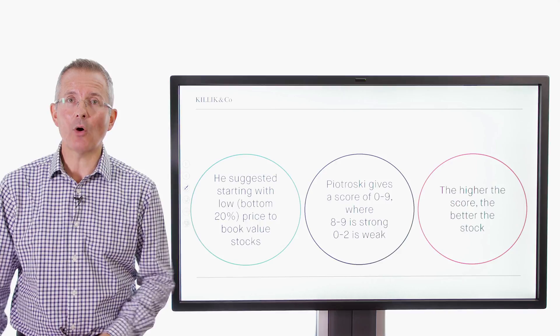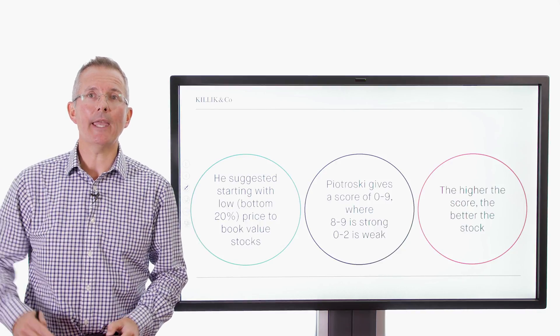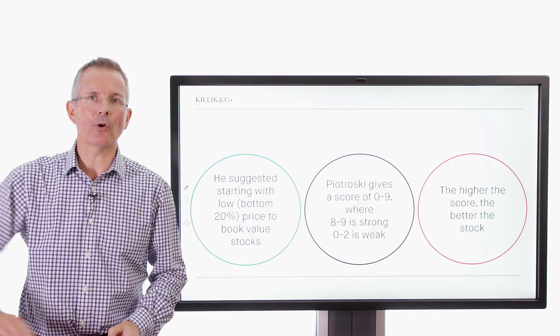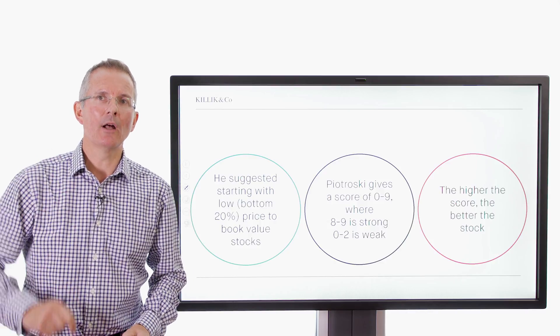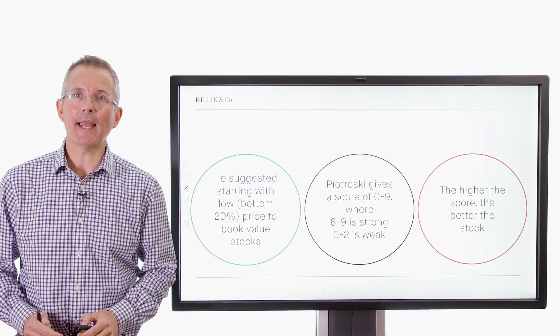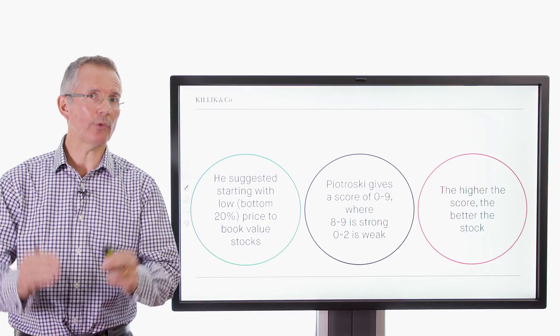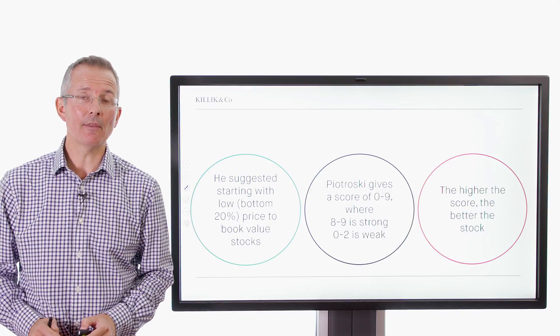The higher the score, the better the stock. So a long short strategy, as it's called, would be buying high F-scoring stocks and dumping or shorting low F-score stocks. Now, private investors can't short stuff very easily. But nonetheless, perhaps there's still some merit in screening for stocks that have high scores and looking to investigate those more.